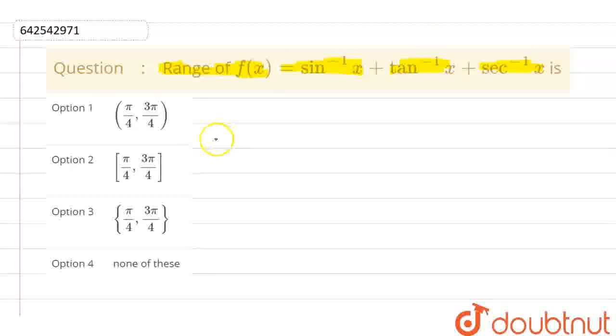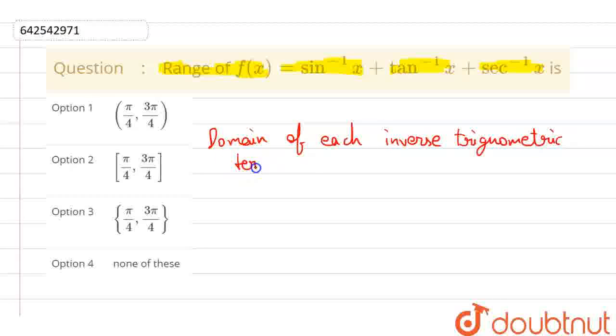Firstly, the domain of each inverse trigonometric term. Sin inverse x domain is closed bracket minus 1 to 1 closed bracket.